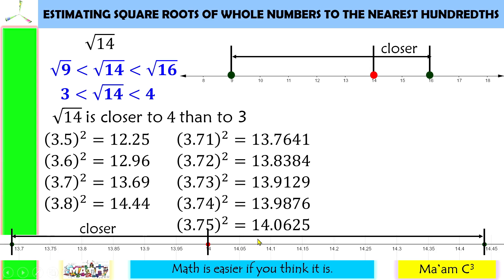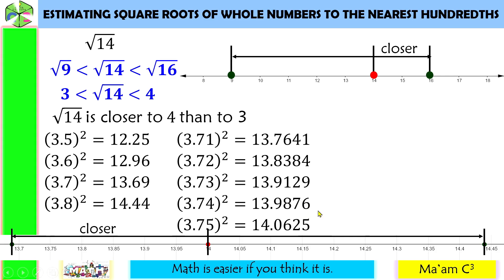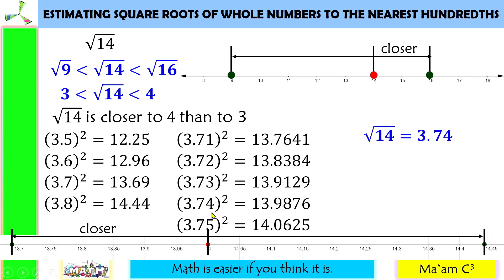Now, I'm going to look again for the numbers closest to 14, and these are 13.9876 and 14.0625. Then I will decide which one is closer to 14. 13.9876 is closer to 14 than 14.0625. Therefore, the square root of 14 is equal to 3.74.